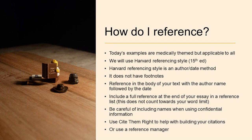Now let's move on to how you actually reference. Today's examples are medically themed but applicable to all situations. The examples we're using will use Harvard referencing style. Other styles are available — it's very similar to what's called APA, the American Psychological Association style. Both are used extensively across the biological sciences. Harvard and APA is an author-date method, so importantly it doesn't have footnotes. You need to have your reference in the body of your text with the author name followed by the date of publication, and then include a full reference at the end of your essay or dissertation in a reference list. Typically, that reference list does not count towards your word limits.